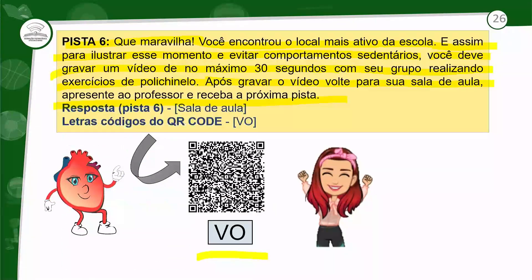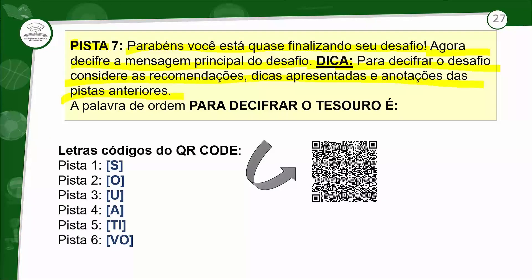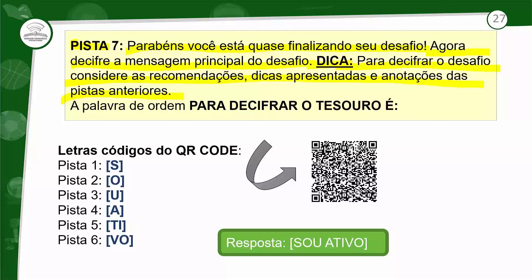Aqui ele vai se exercitar — ele já está se exercitando desde a primeira pista. A última pista — pista 7: parabéns! Você está quase finalizando o seu desafio. Agora, decifre a mensagem principal do desafio. A dica: para decifrar o desafio, considere as recomendações, dicas apresentadas e anotações das pistas anteriores. Aqui é o momento que ele vai juntar as letras que foi anotando em cada pista. A palavra de ordem para decifrar o tesouro: pista 1 — S, pista 2 — O, pista 3 — U, pista 4 — A, pista 5 — Ti, pista 6 — Vo. Sou ativo! Então, o caça ao tesouro vai terminar aí. Depois de correr bastante, fazer polichinelo, procurar — ele descobriu que ele é ativo.